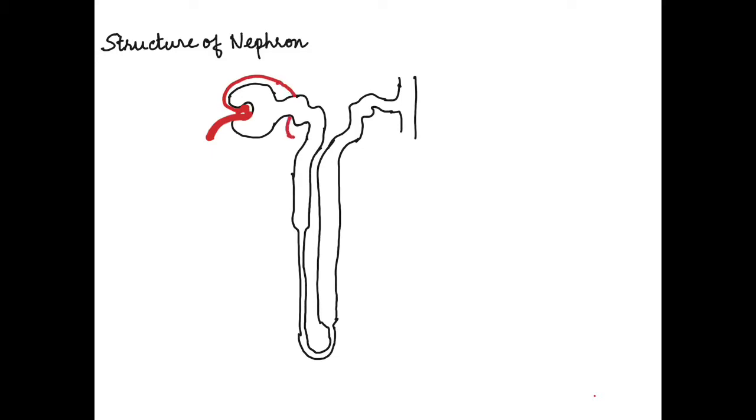These arterioles, once they enter inside the glomerulus to form a network, come out and then form branches around the thick tubules that are present. These coil around and form a highly dense network of capillaries along the entire length of the tubules.